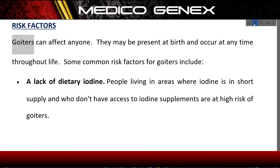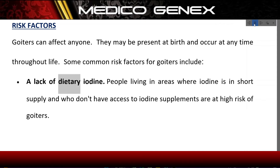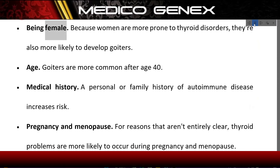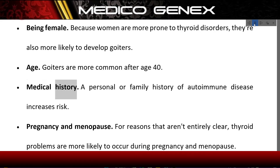Risk Factors. Goiters can affect anyone; they may be present at birth and occur at any time throughout life. Some common risk factors include: a lack of dietary iodine — people living in areas where iodine is in short supply and who don't have access to iodine supplements are at high risk. Being female — because women are more prone to thyroid disorders, they are also more likely to develop goiters. Age — goiters are more common after age 40. Medical history — a personal or family history of autoimmune disease increases risk.